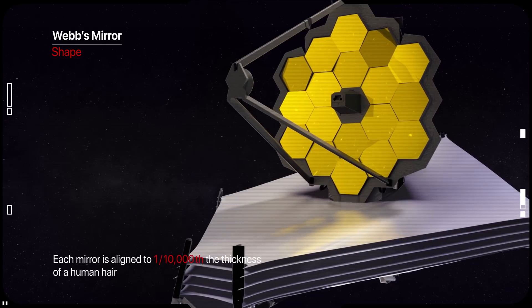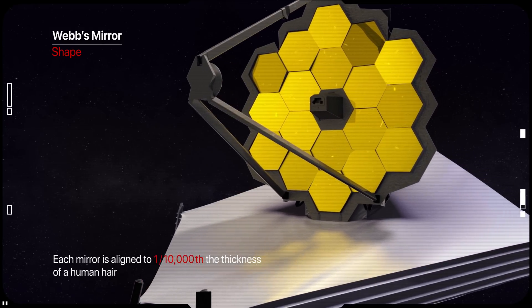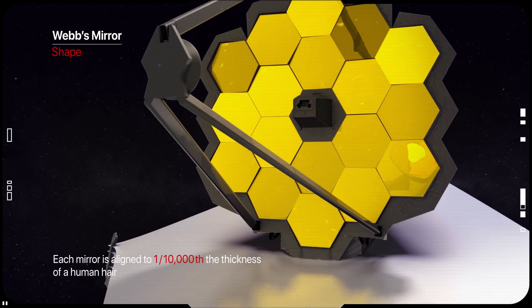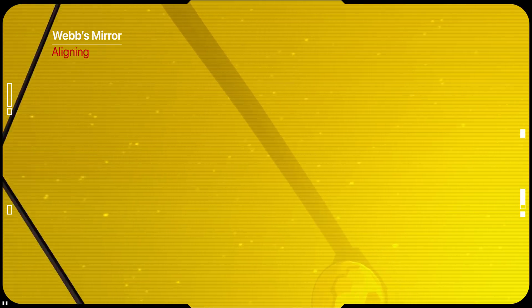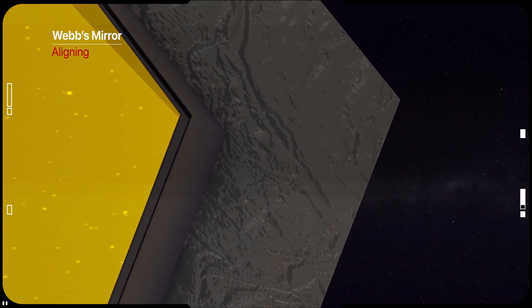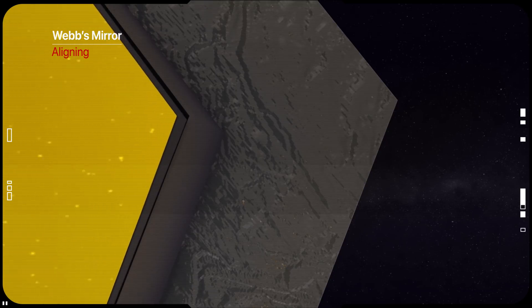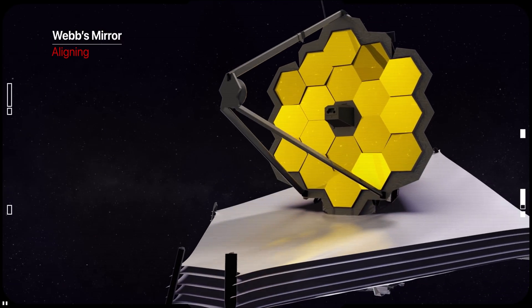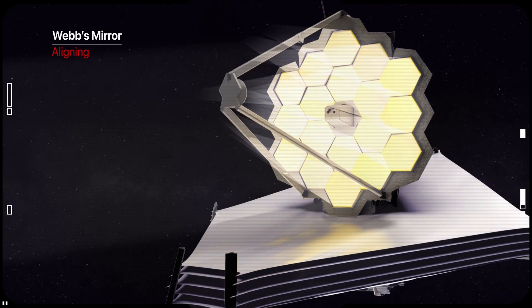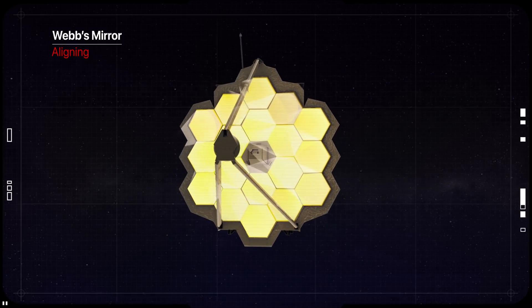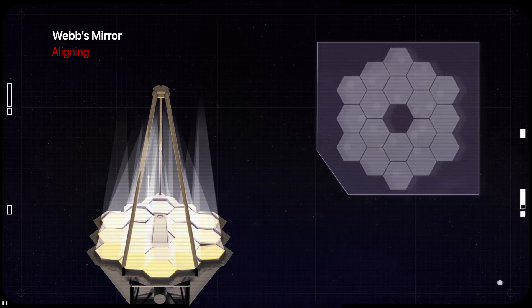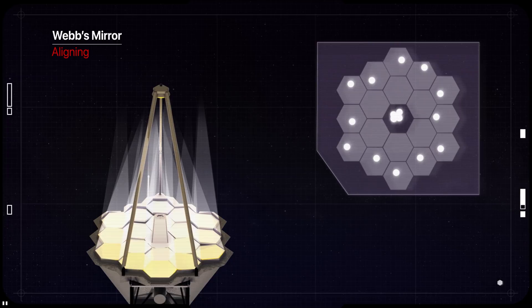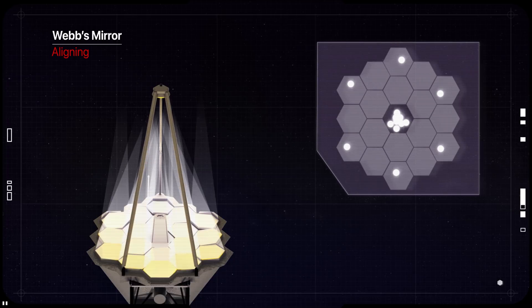The hexagonal shape allows for a roughly circular segmented mirror with a high filling factor and six-fold symmetry, meaning these segments fit together without gaps. In order for Webb's primary mirror segments to act as a single optic once in space, each of the 18 hexagonal segments must be aligned within a fraction of a wavelength near nanometers, or about 10,000 times thinner than a human hair.